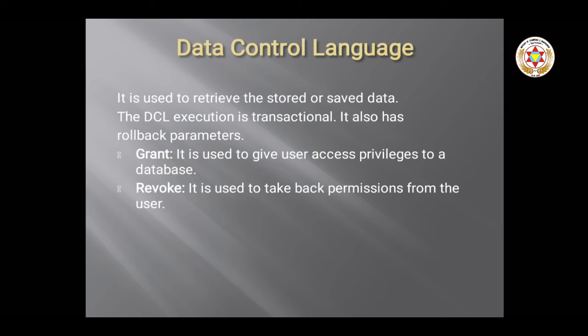Next is DCL — Data Control Language. It is used to retrieve stored or saved data. DCL execution is transactional and is also called rollback parameters. It has two commands: GRANT and REVOKE. GRANT is used to give permissions or privileges — access to the database.